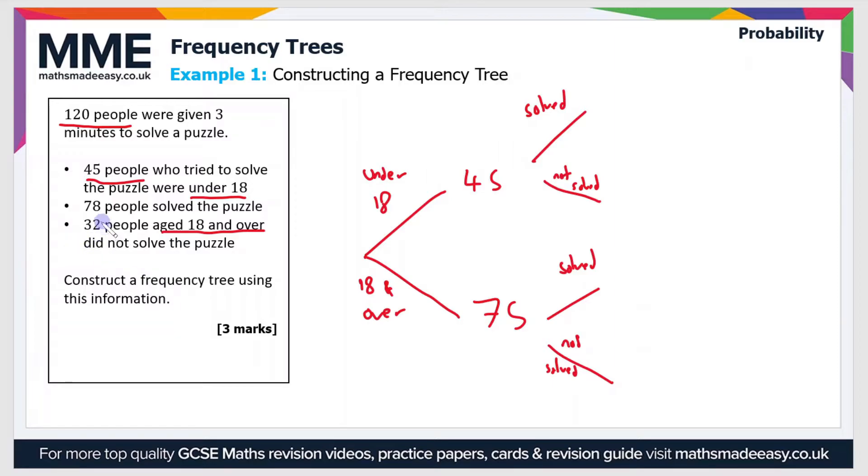If we look at the question, it says that 32 people aged 18 and over did not solve the puzzle. So if we go to the 18 and over branch, which is this one on the bottom, 32 people did not solve the puzzle, so we can add 32 to the bottom branch of the tree diagram.